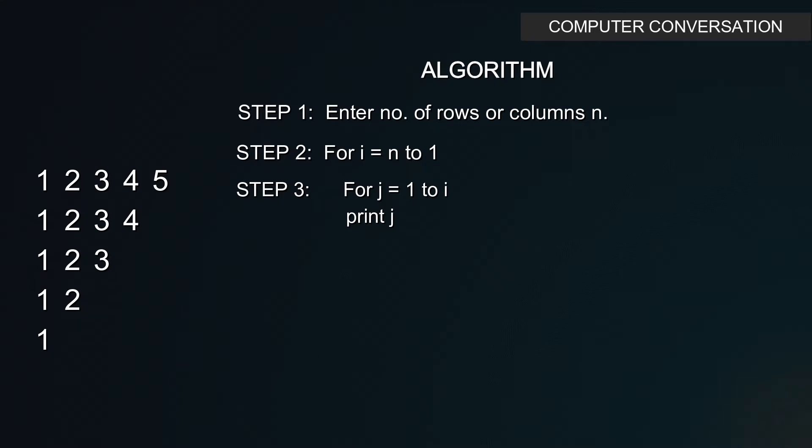So for the first iteration of i, the inner loop will run from 1 to i which is 1 to n and will print numbers from 1 to n, here n equals 5. In the next iteration of i, i will be n-1 that is 5-1 which is 4 here, and the inner loop will print numbers from 1 to 4.